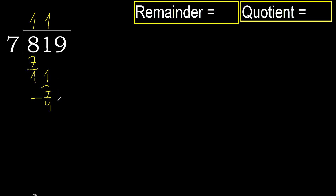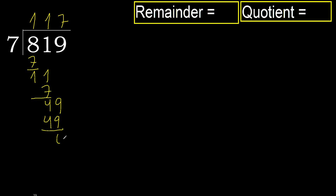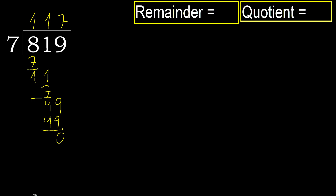Next: 49. 7 multiplied by 7 is 49 — 49 is not greater. Subtract. Next: there is no number, therefore finished.